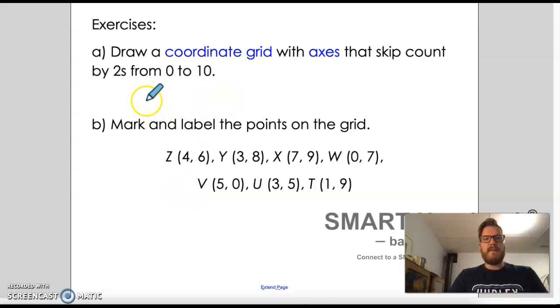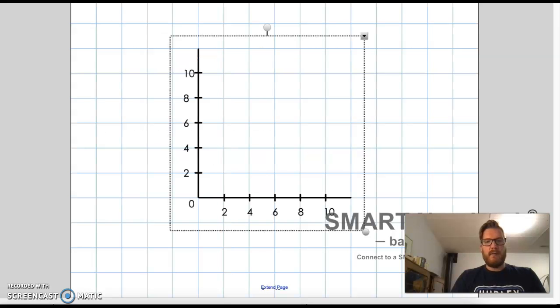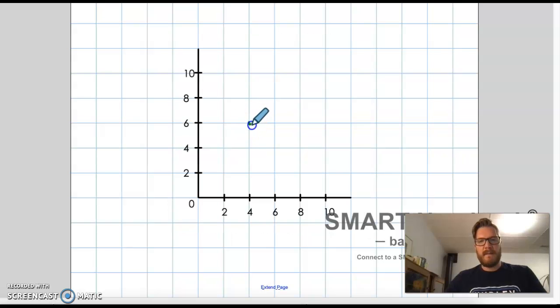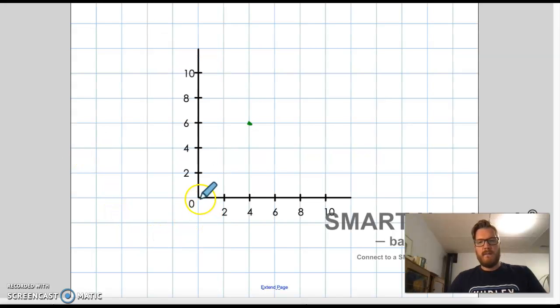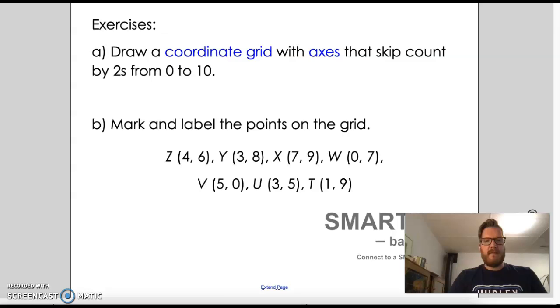So what they want us to do is to draw a coordinate grid with axes that skip count by twos from zero to 10. Again, I've done that on the next slide. Then we can mark and label these points real quick. So the first one is four, six. And so we go over four and then up six. And so we can draw the point right there. The next one is three, eight. So we go over one, two, three, and then go up eight. So I'm going to be in the middle of this section right here.